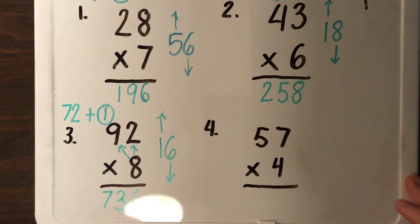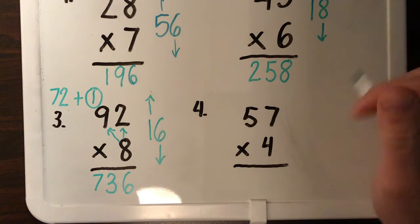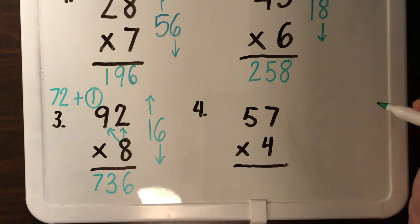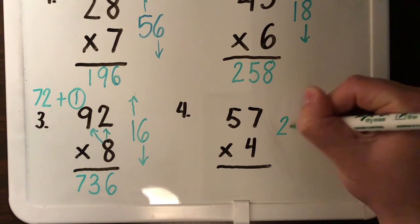Okay, and then my last one over here. Seven times four. Seven, 14, 21, 28. Oh, it's 28. Okay, so I put my 28 over here.